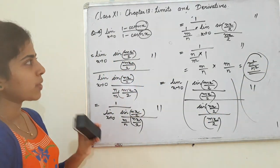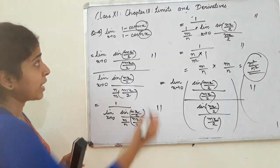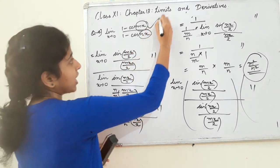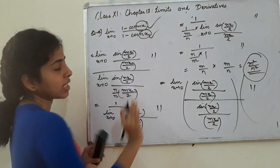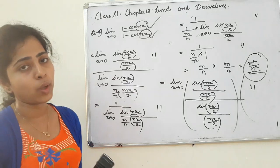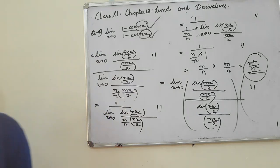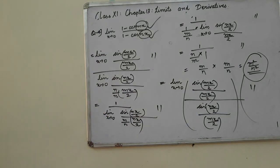So we can write the answer as m square by n square. This is the formula. Other questions you can expect — we can answer using this formula and model questions. Okay, thank you.